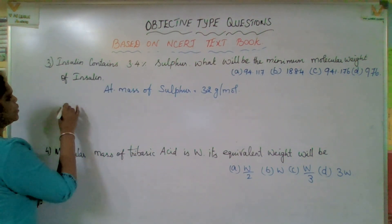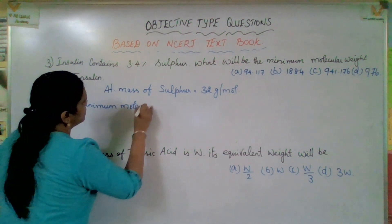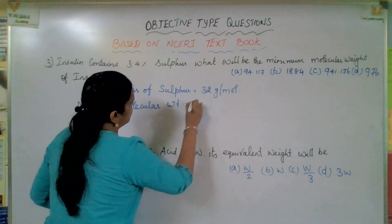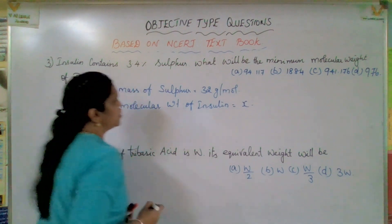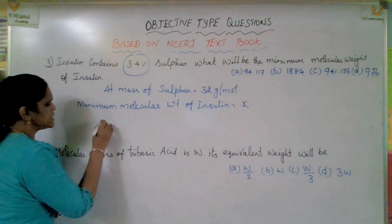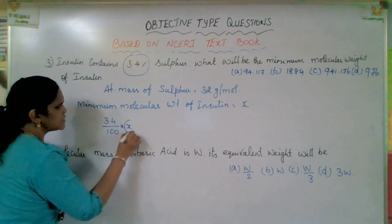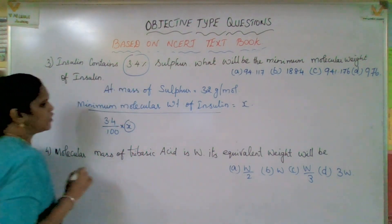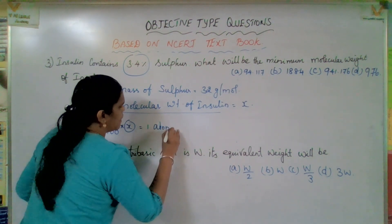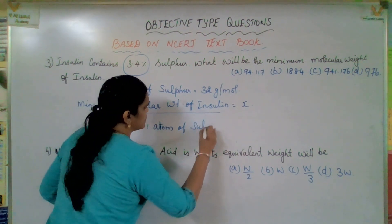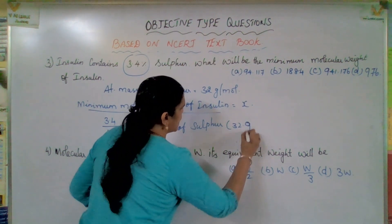Minimum molecular weight of insulin — let us keep it as X. They have given the percentage, which is 3.4 divided by 100 into X. X is the minimum molecular weight of insulin. If we know X, we will come to know one atom of sulphur, which is 32 gram per mole.